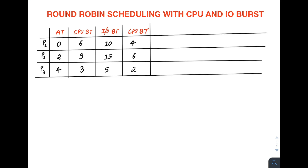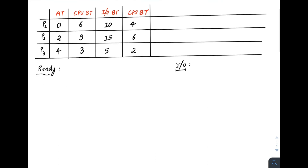To solve Round Robin scheduling problems you have to maintain a ready queue. We will also maintain a separate list of processes undergoing I/O. Let's start drawing the Gantt chart. At time zero, P1 arrives into the ready queue. Since there is only one process, let's give it the CPU — but first I forgot to mention the time quantum.